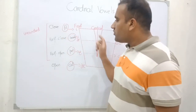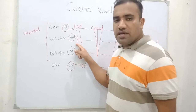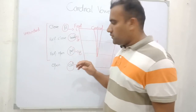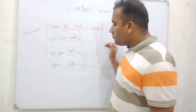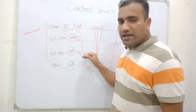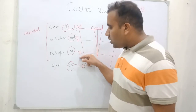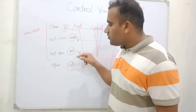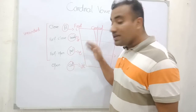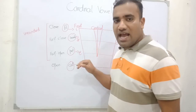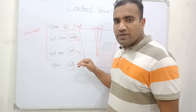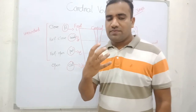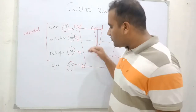If you say 'beak', this is the half closed position. If you say 'pet', that is a more open position. And if you produce 'cat', your mouth widens — this is the open front vowel.